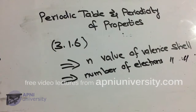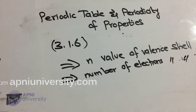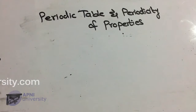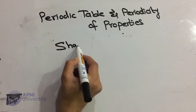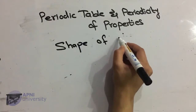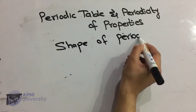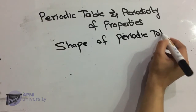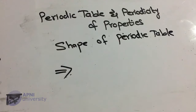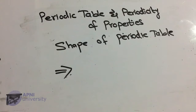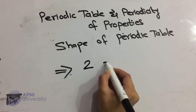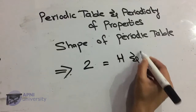Our next topic is the shape of the periodic table. Elements are arranged in order of increasing atomic number. Periodic table mein different elements ko increasing atomic number ke according arrange kiya jata hai.